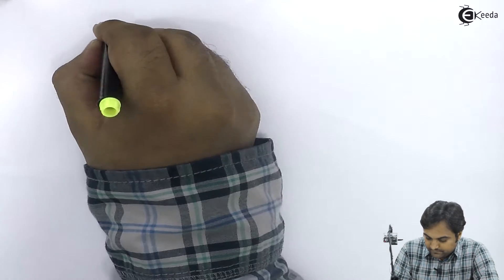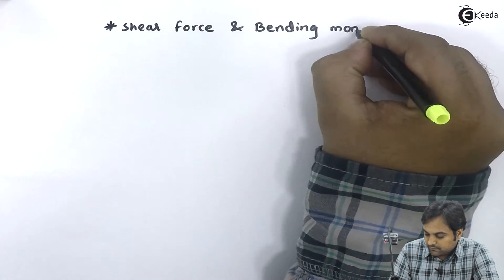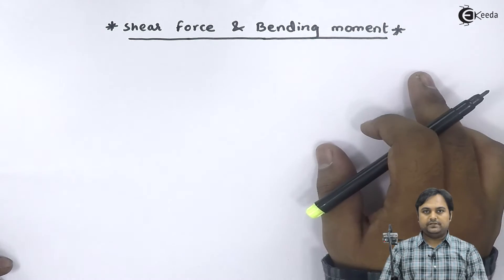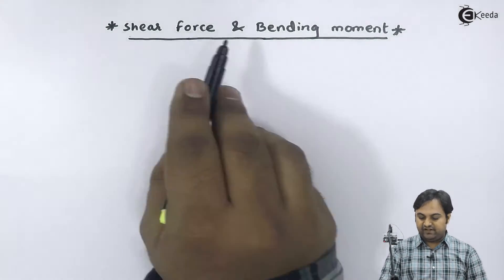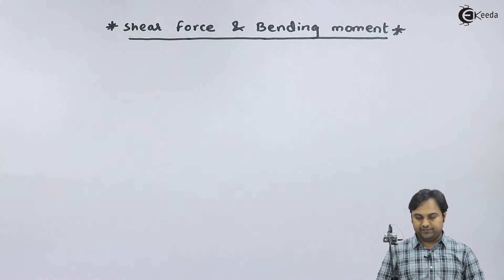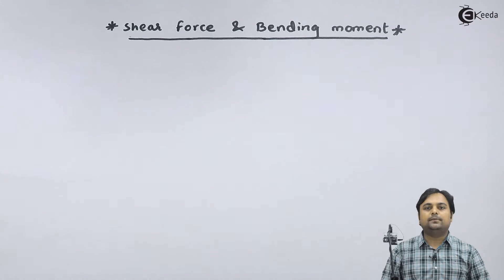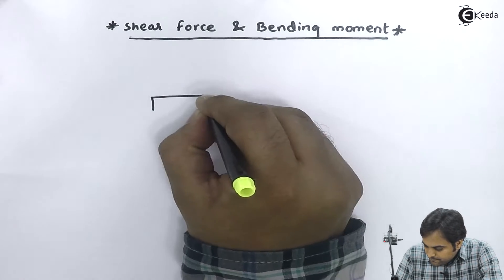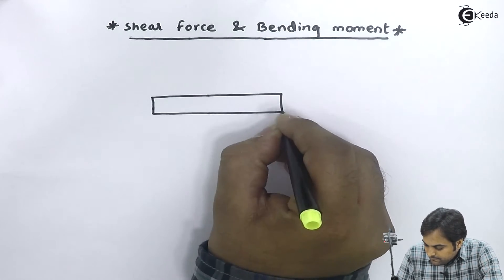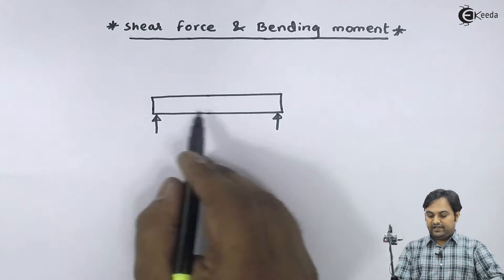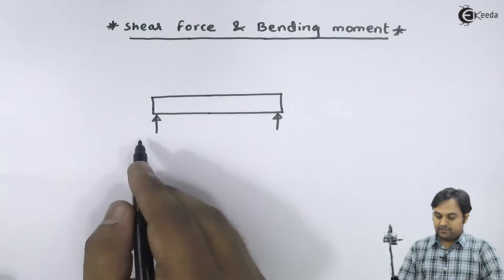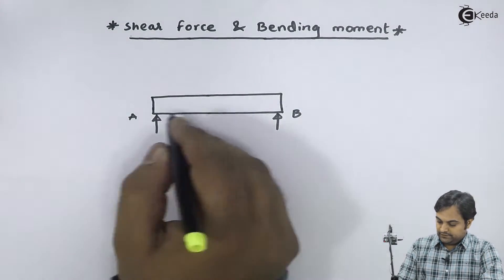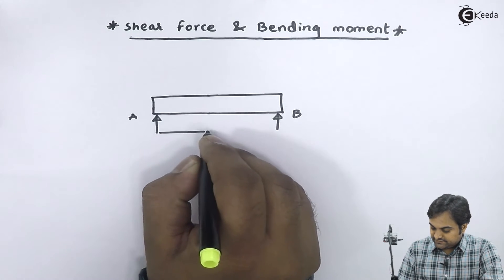The name of this chapter is Shear Force and Bending Moment — in short, SF and BM, where SF stands for Shear Force and BM stands for Bending Moment. Let me explain what these terms mean by drawing a diagram. Here we have a horizontal beam supported at its two ends, which I'll call A and B, with a length of L.